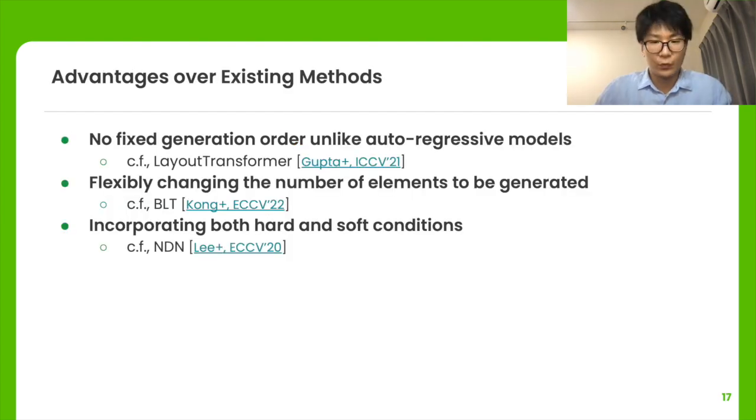Next, we discuss the critical advantages of LayoutDM over existing methods. First, it doesn't assume any specific generation order, unlike autoregressive models. Second, it can flexibly change the number of elements to be generated. Third, it can incorporate both hard and soft conditions. The advantages are all essential to build a unified model and LayoutDM is the only one to fulfill the requirements.